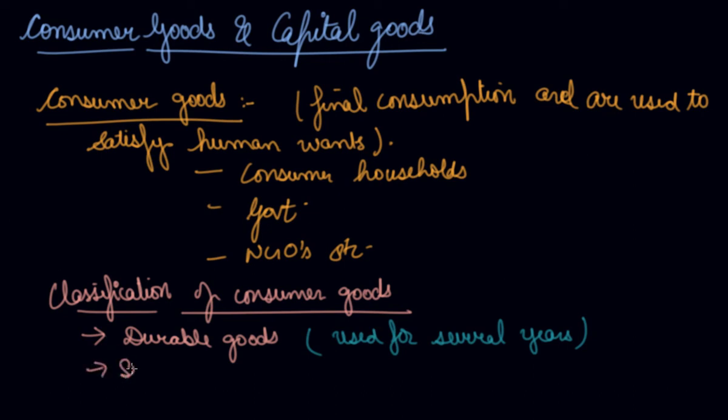Semi-durable goods are the goods that last for a few years, which can be used for a period of one year or more than that. Let's say, your crockery, your clothes, some electric appliances.